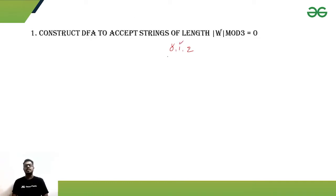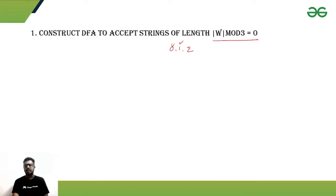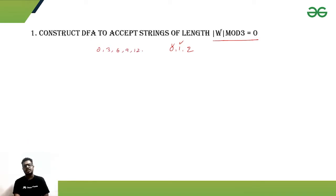In our first problem, the length of the string should be perfectly divisible by 3. That means our DFA will accept strings of length 0, 3, 6, 9, 12, and so on. So there should be some states to handle this.